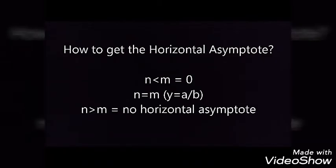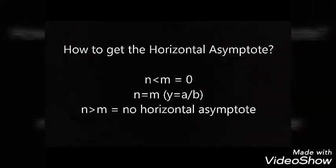Next, we have to get the horizontal asymptote. Let n be the degree of the numerator — the degree meaning the exponent — and m be the degree of the denominator. If n is less than m, the horizontal asymptote is 0. If n equals m, the horizontal asymptote is y equals a over b, where a is the leading coefficient of the numerator and b is the leading coefficient of the denominator. If n is greater than m, there is no horizontal asymptote.